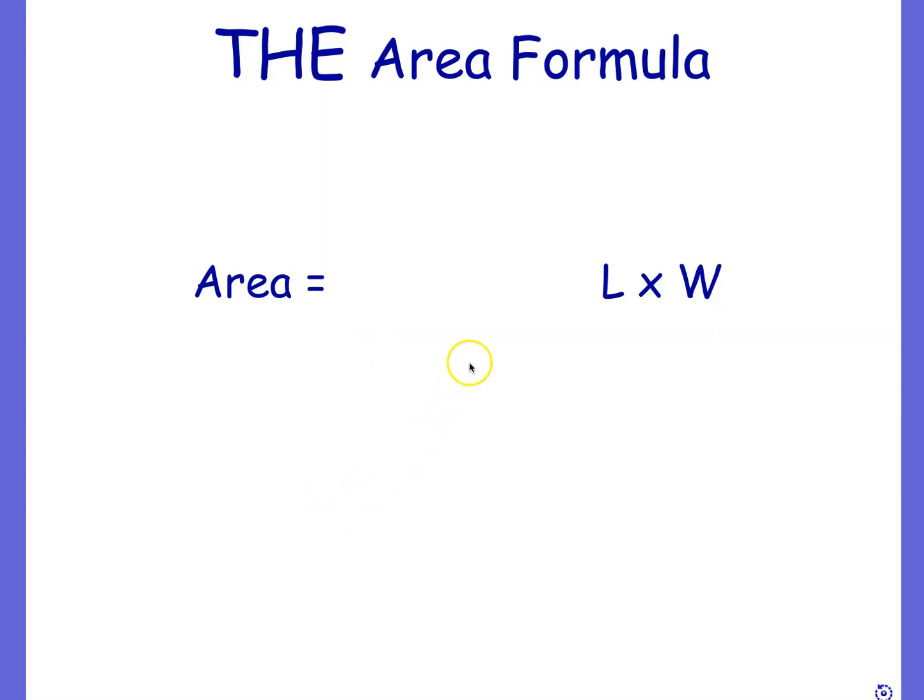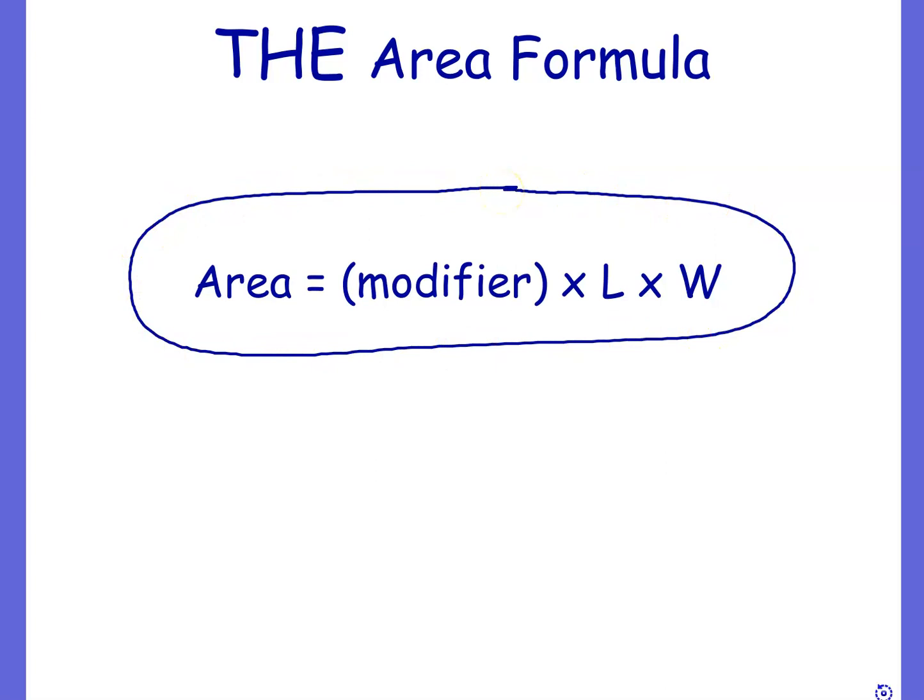And then with things like triangles and kites, I just call that area as a modifier times length times width. So that pretty much is your area formula for all the shapes we've looked at so far. So you don't need ten different formulas, which my textbook seems to have. You can get by with just one.